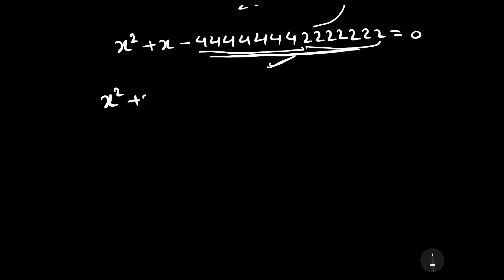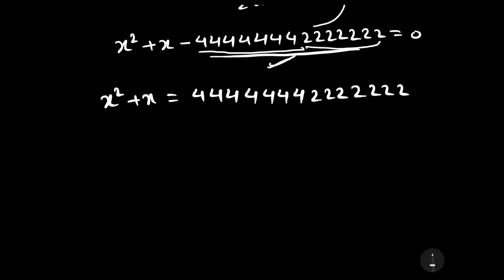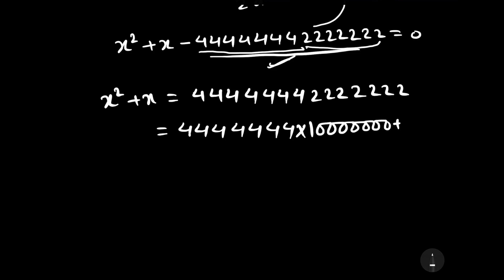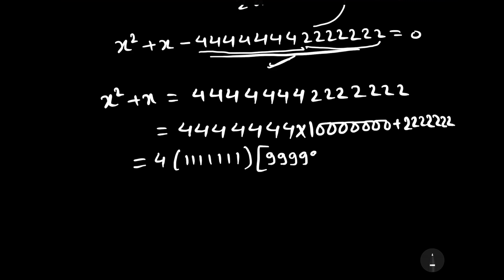Let us rearrange the right-hand side. We can write 7 to the power 4 multiplied by 1 into 7 to the power 0, plus 7 to the power 2. Further, we can write it as 4 multiplied by 7 to the power 1, and 7 to the power 0 can be written as 7 to the power 0. So we can write it as 9 times 7 plus 1, plus 7 squared.